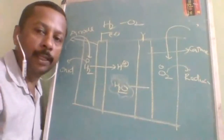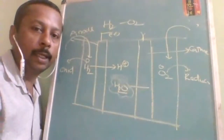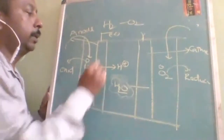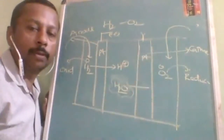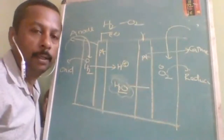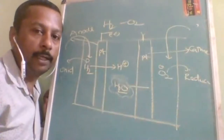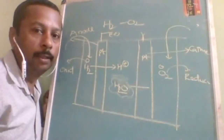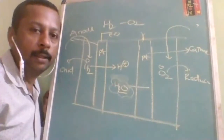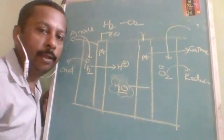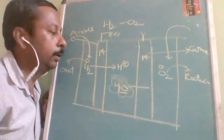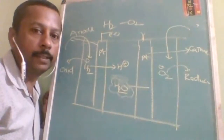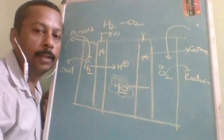The product of the fuel cell reaction is H2O, which is environmentally friendly. Therefore it finds use in space missions like the Apollo space mission. The disadvantage is that the reaction is very slow, so platinum is used as a catalyst to increase the rate of reaction. However, platinum is very expensive, making it impractical for daily life use. That is all about commercial cells.